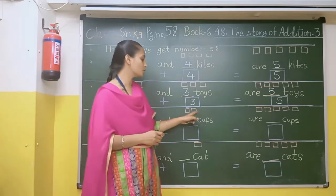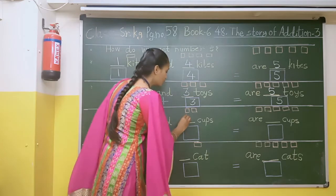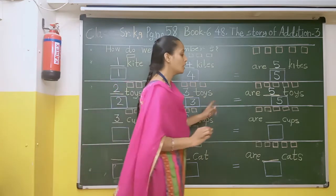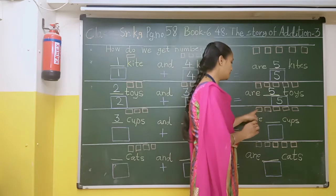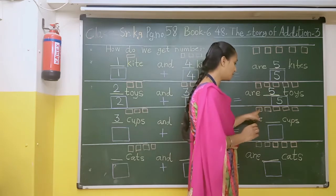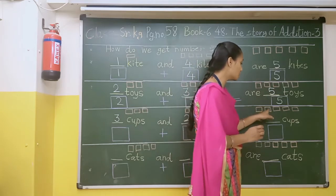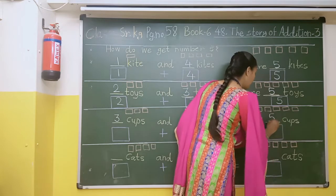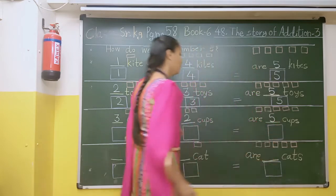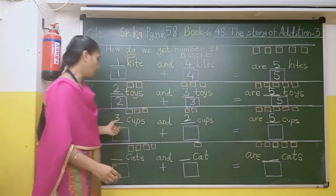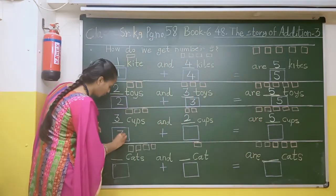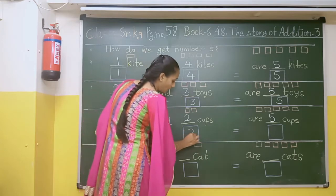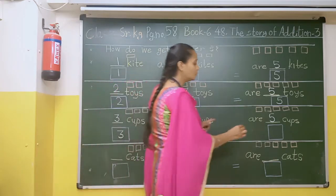Here there is an image of kites. So here we will write 2. If we gathered all these kites, then how many will it be? 1, 2, 3, 4, 5. So here we will write 5. So 3 plus 2 is equal to 5.